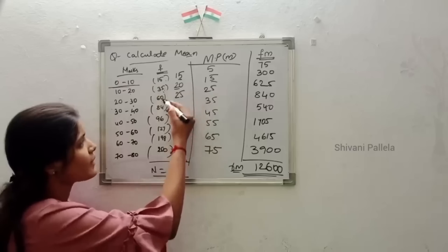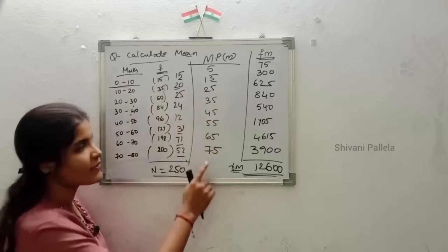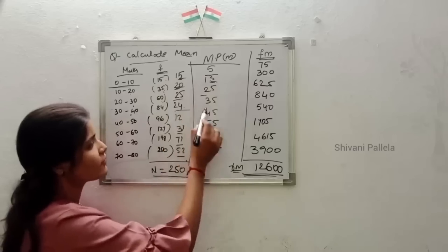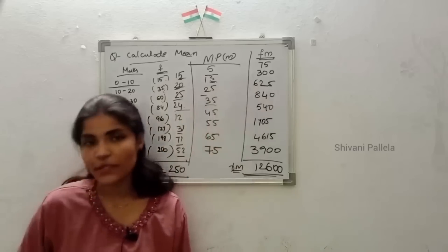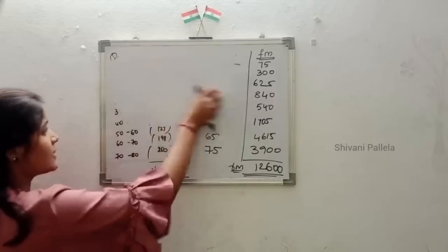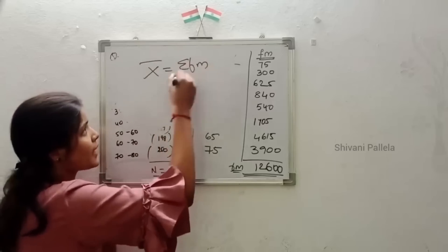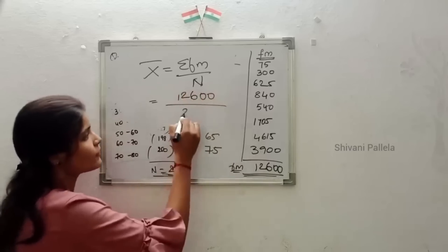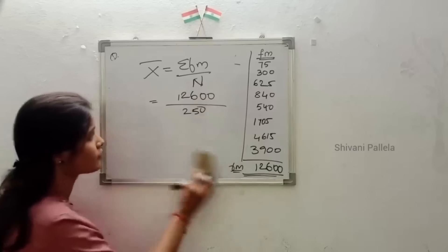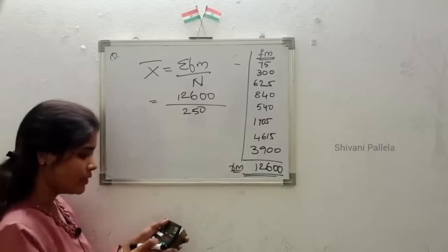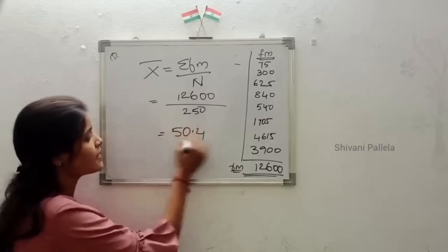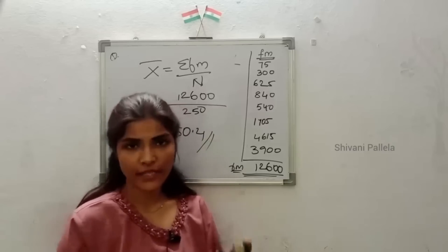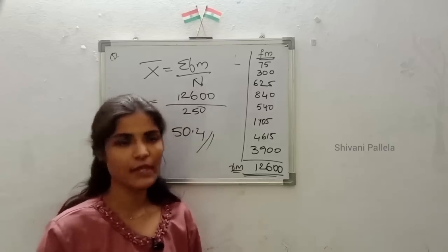Now substitute into the formula. The arithmetic mean formula is x̄ = σfm / n. The FM total is 12600 and n is 250, so 12600 divided by 250 equals 50.4. Therefore, x̄ = 50.4. This is the simple method. Whenever they ask 'calculate arithmetic mean from the following data,' use this method.